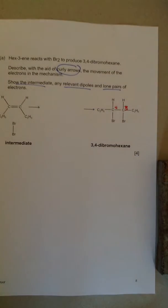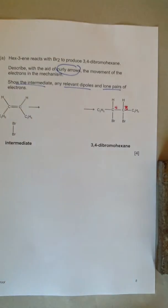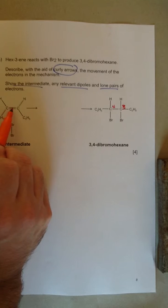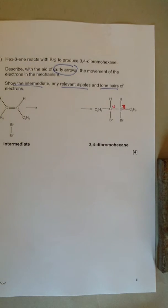First things first, it says show the relevant dipoles. As the bromine gets close to the double bond, the double bond contains lots of electrons, it becomes polarized.